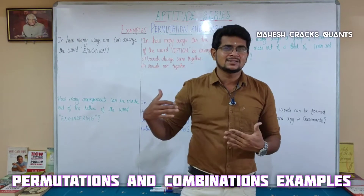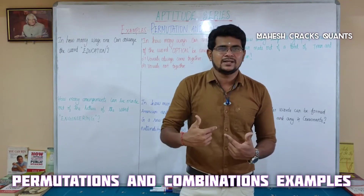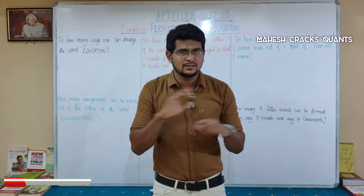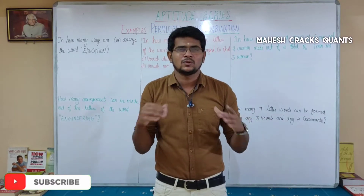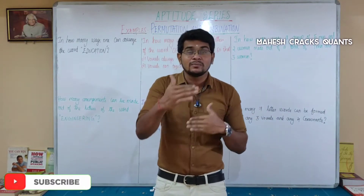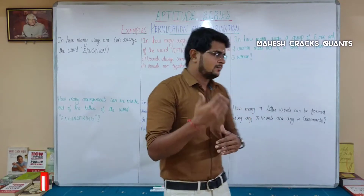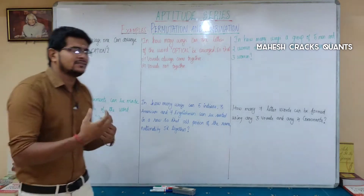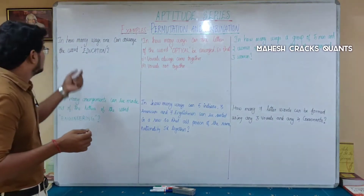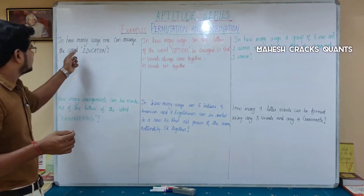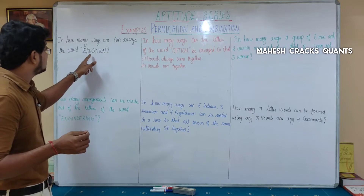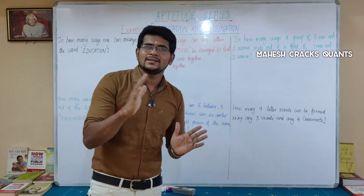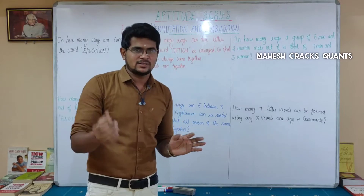But before confirming, check if any letter is repeated. If there is a repeated letter, you remove it from the denominator. How many letters are in 'education'? 1, 2, 3, 4, 6, 8, 9 — there are 9 letters. So 9 letters can be arranged in 9-factorial ways.